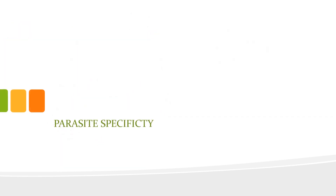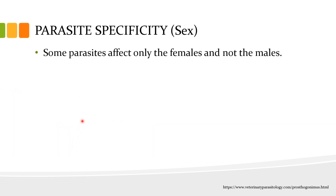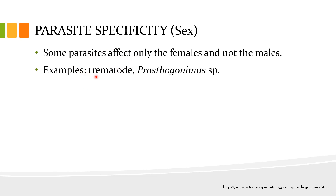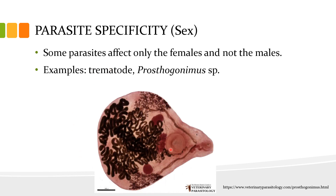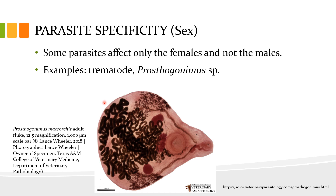Let's now proceed to parasite specificity in relation to the sex of the host. Some parasites affect only females and not males. This is exemplified by the Trematode parasite Prosthogonimus species, which is mostly found in the oviduct of female Gallinaceous birds. This diagram shows the adult of the Prosthogonimus macrorchis fluke — a genus of flatworm belonging to the Trematodes — that has chickens, ducks, turkeys, and other domestic and wild birds as its final host.